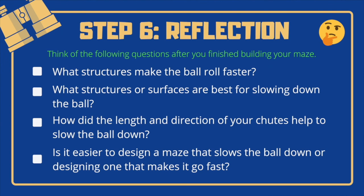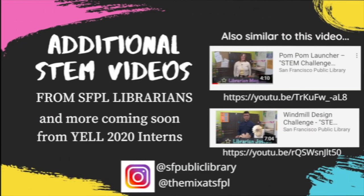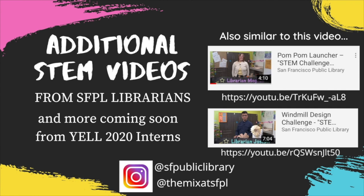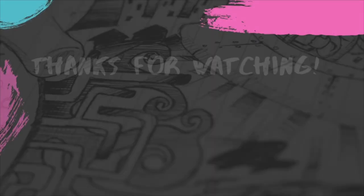The last part is the reflection. After you've finished building your maze, think of the following questions: What structures make the ball roll faster? What structures or surfaces are best for slowing down the ball? How did the length and direction of your tubes help to slow the ball down? Is it easier to design a maze that slows the ball down, or designing one that makes it go fast? Be sure to check out the rest of the STEM Challenge Yourself videos by SFPO librarians and Yale interns.